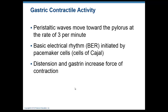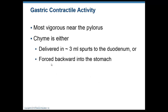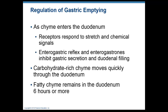Chyme is delivered to the small intestine in only 3-milliliter spurts — small little bits at a time. As pH changes in the stomach, that affects movement of food to the small intestine. High carbohydrate contents promote faster movement into the small intestine — sugary foods and starches are digested faster than fatty, protein-laden foods. Fatty chyme can remain in the stomach 6 hours or more, while carbohydrate-rich chyme moves much more quickly.